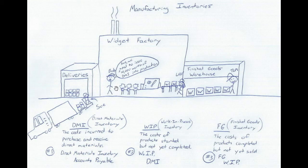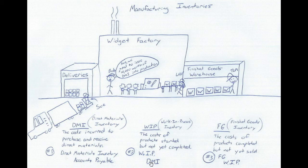So now we take the DMI and put it into production. Remember, these are all inventory accounts — DMI is an inventory account, WIP is an inventory account, and finished goods is an inventory account. When we issue the DMI into production, it comes out of DMI — DMI gets credited, this inventory account goes down — and then we put it into WIP. Once it's on the factory floor and being produced, here's Lucy working the assembly line, and as it is on the floor it is held in WIP.